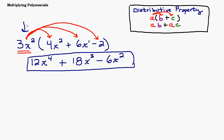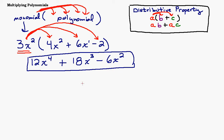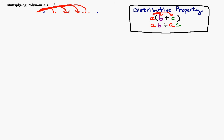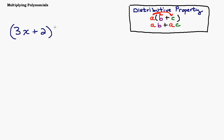A monomial times any polynomial — binomial, trinomial, or otherwise — is just a matter of distributing that monomial and multiplying by however many terms are inside. But what if we have a binomial times a binomial? Let's take an easy example: 3x plus 2 multiplied by 4x plus 7. Here we distribute the entire 3x plus 2, multiplying it by 4x and then by 7.